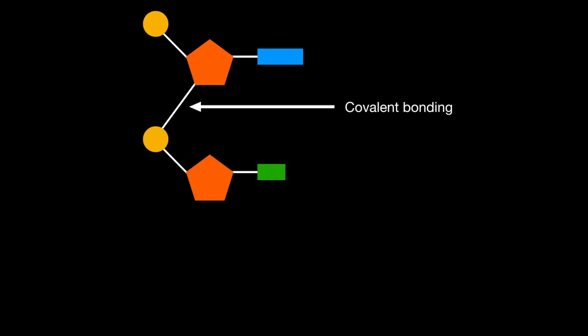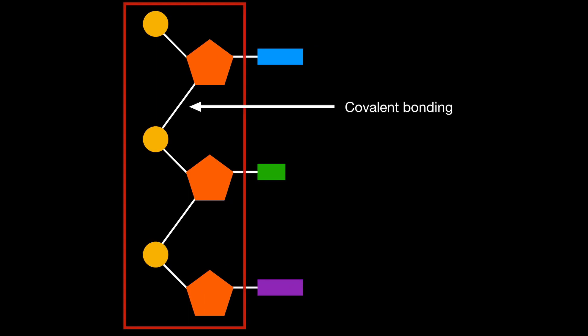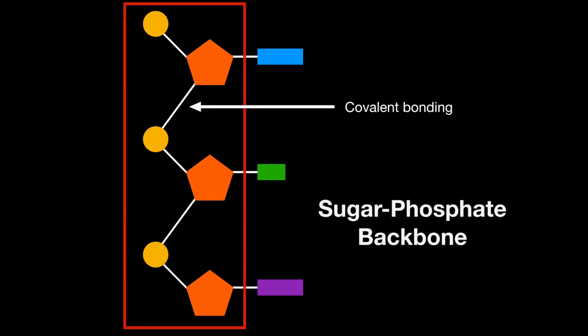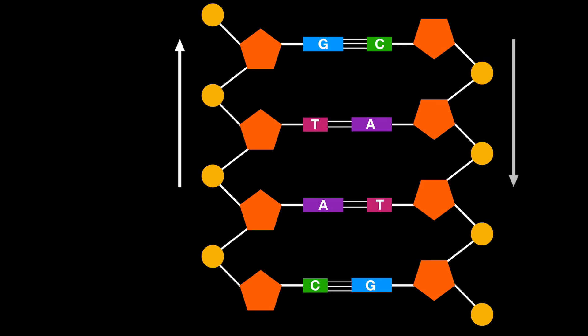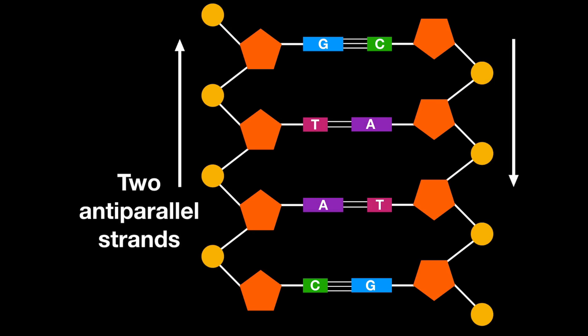Nucleotide monomers are joined together by covalent bonding in order to form a sugar-phosphate backbone that is part of both RNA and DNA. Since RNA is a single-stranded molecule, you would just see one sugar-phosphate backbone. However, DNA is a double helix, therefore it has a sugar-phosphate backbone on both the left and the right-hand sides, and these form two anti-parallel strands in DNA.